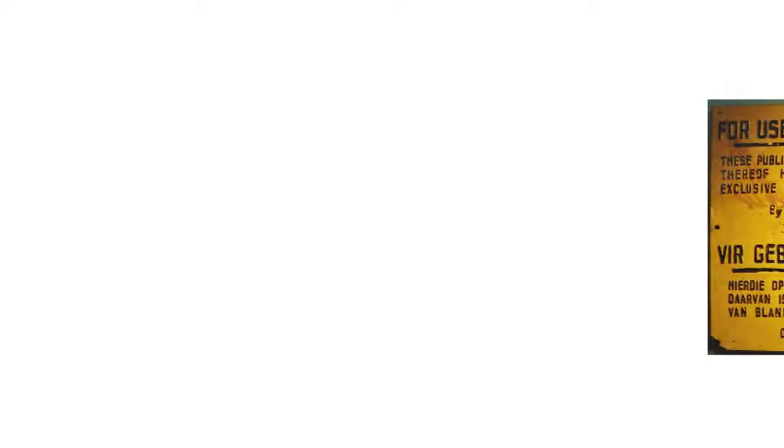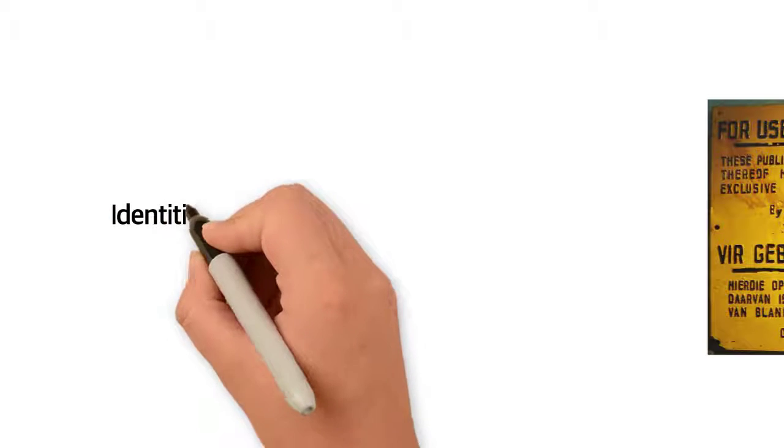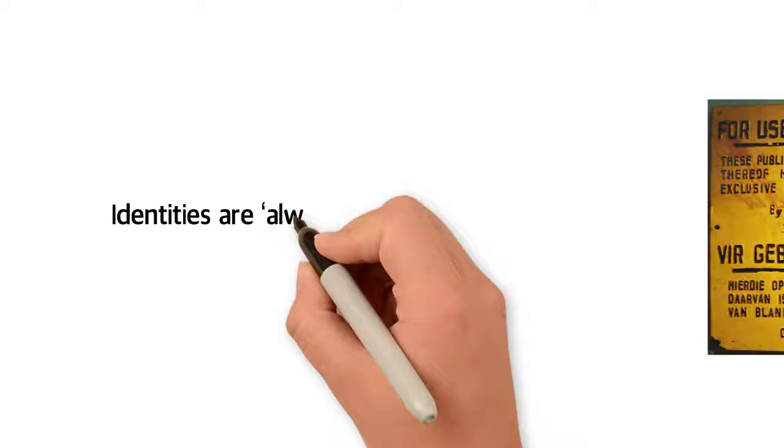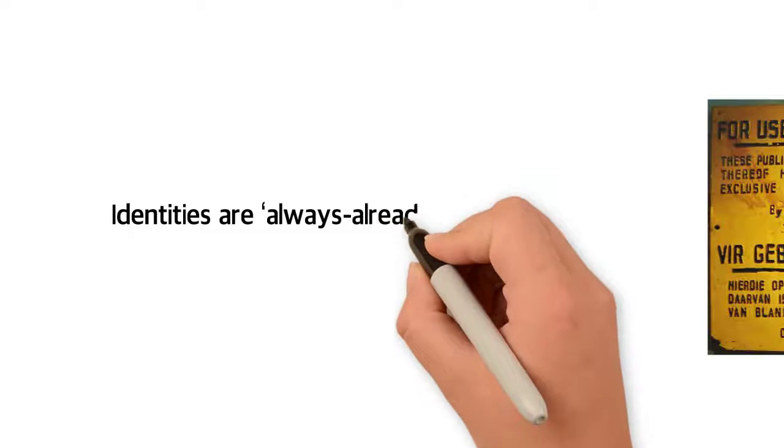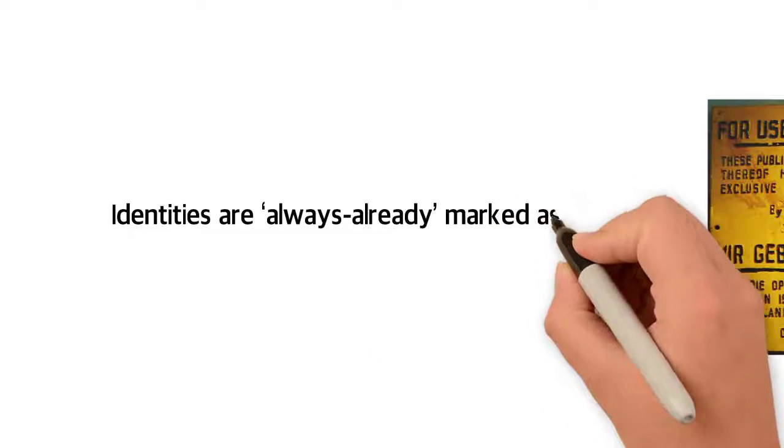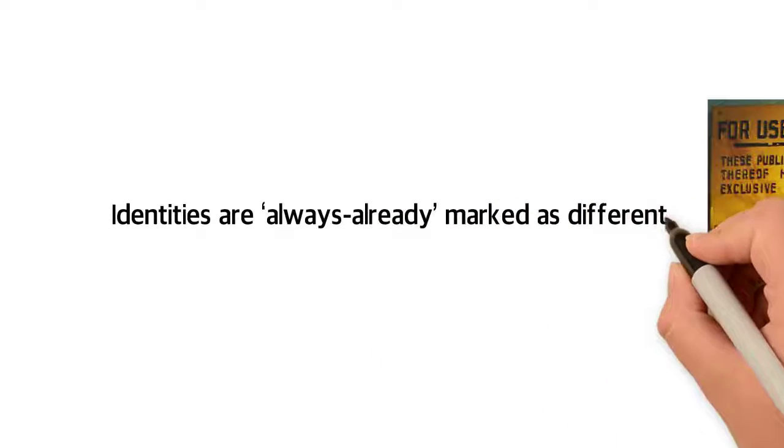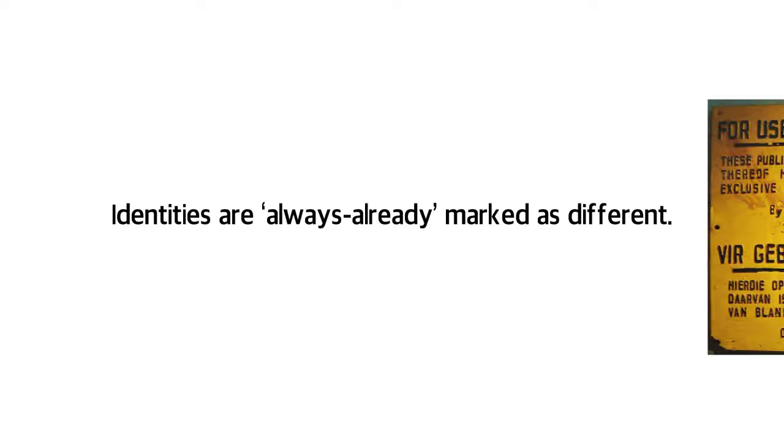For example, being an acceptable person can only come about if the social contract creates strict rules about what and who is not acceptable. Further, the way these differentiations come about can, again, only be useful if some identities are always already marked as different.